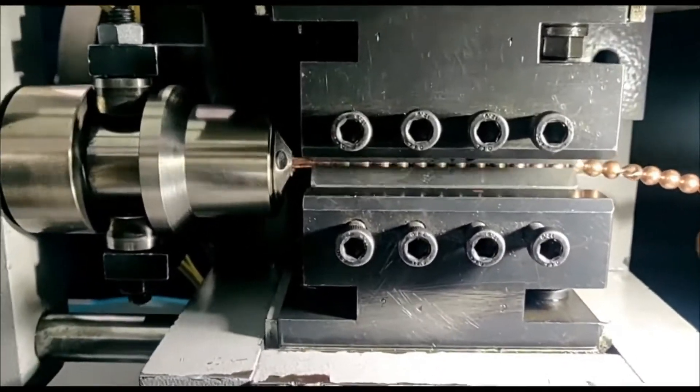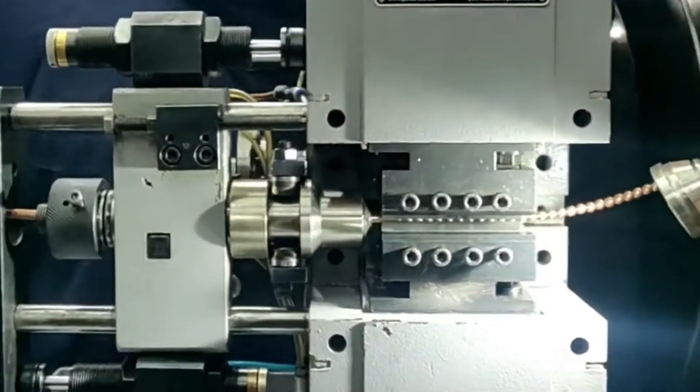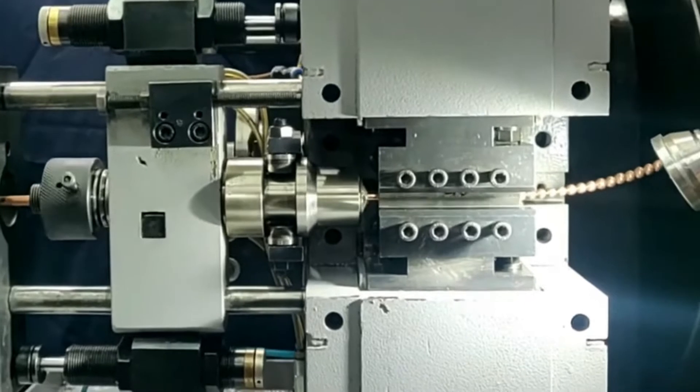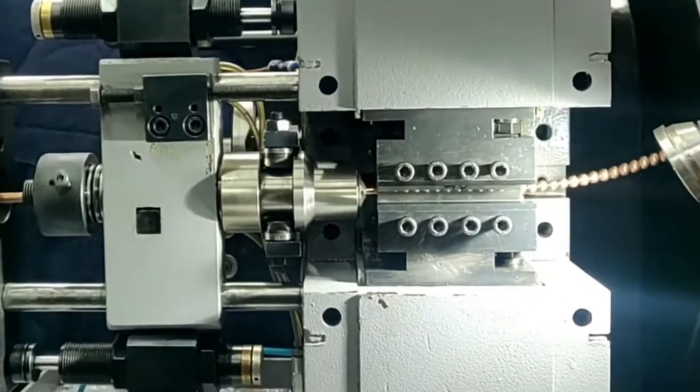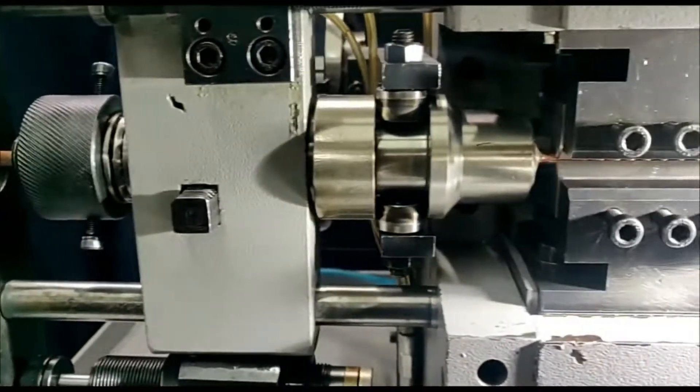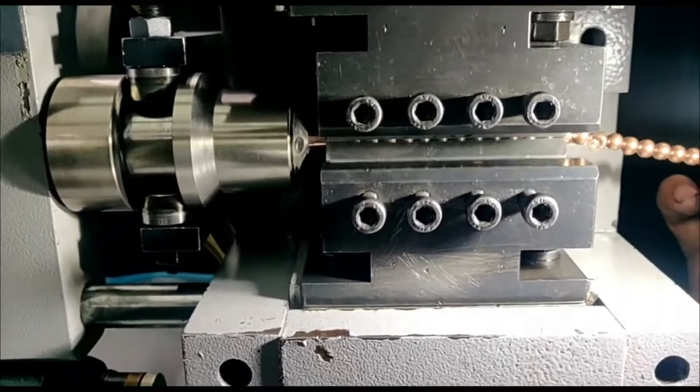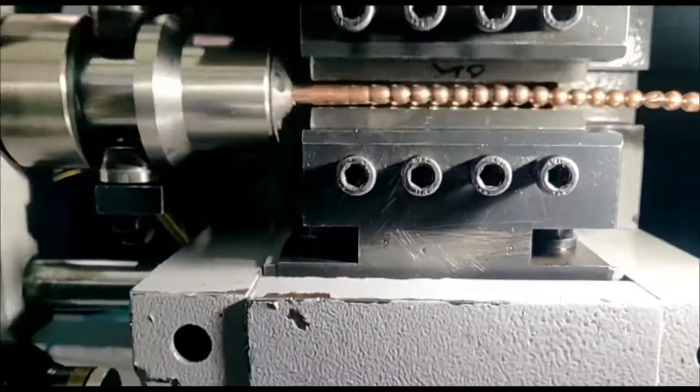But the actual shape of the ball is created by the die shape. So you can see the copper tube is pressed between two die pieces.